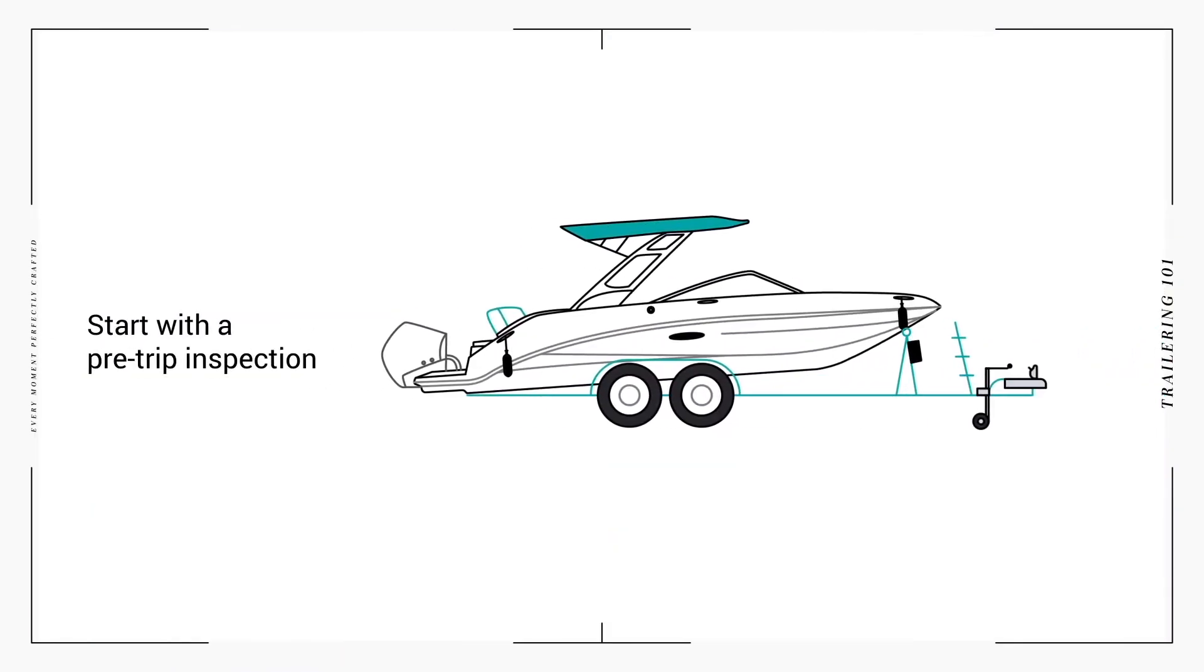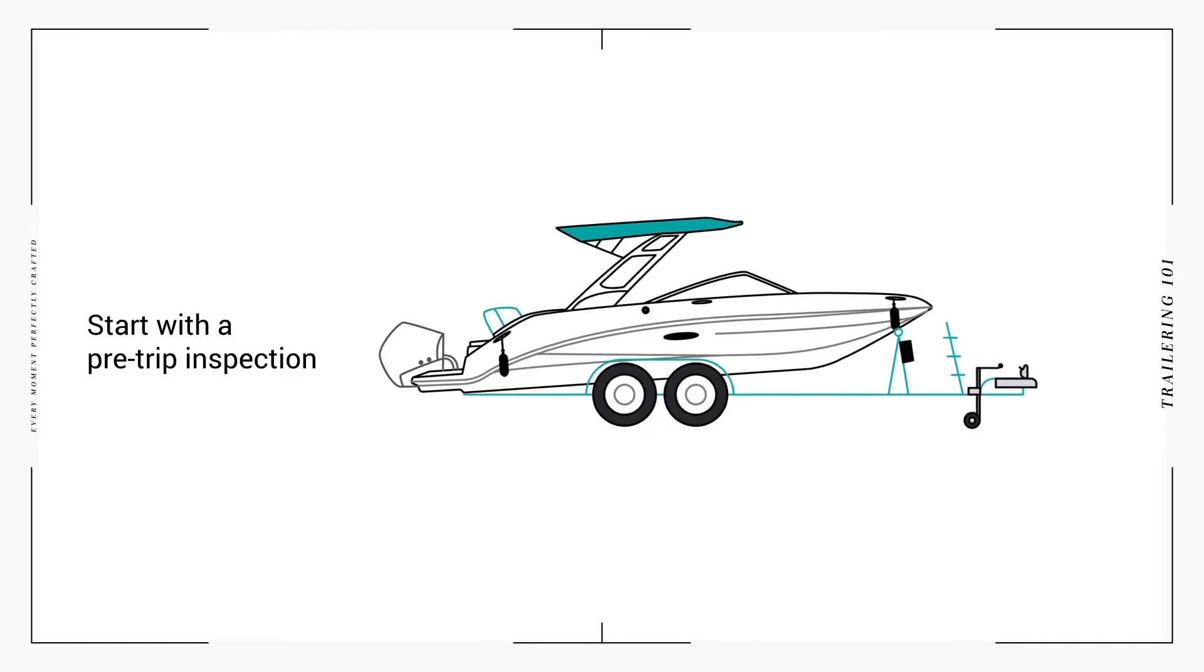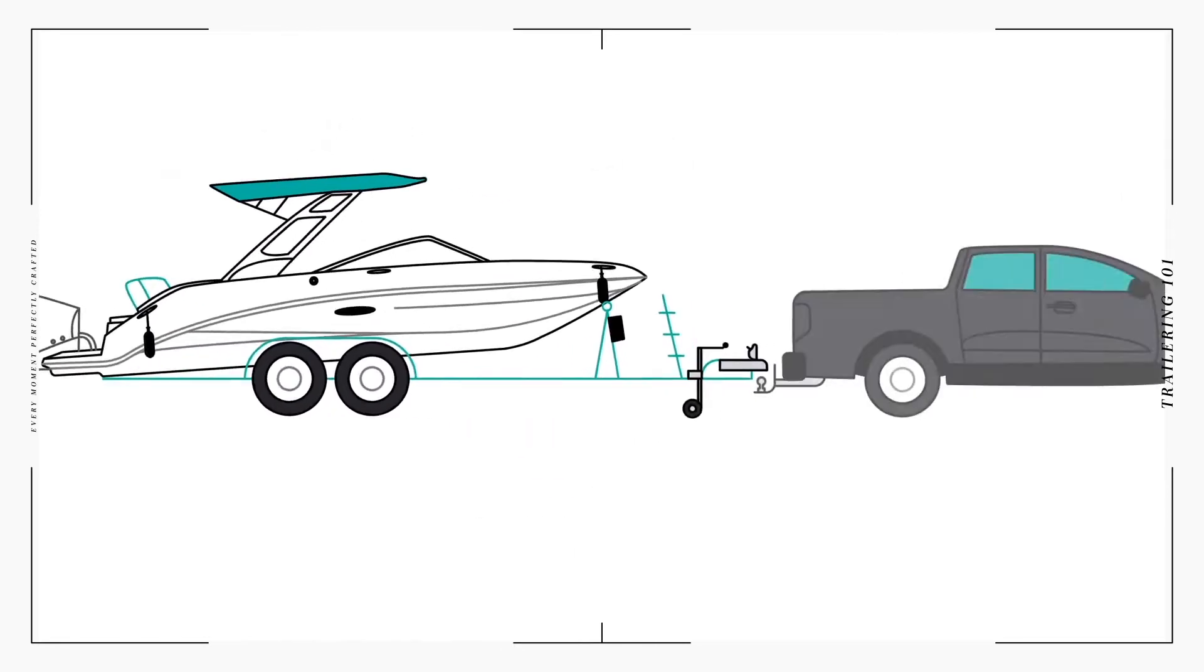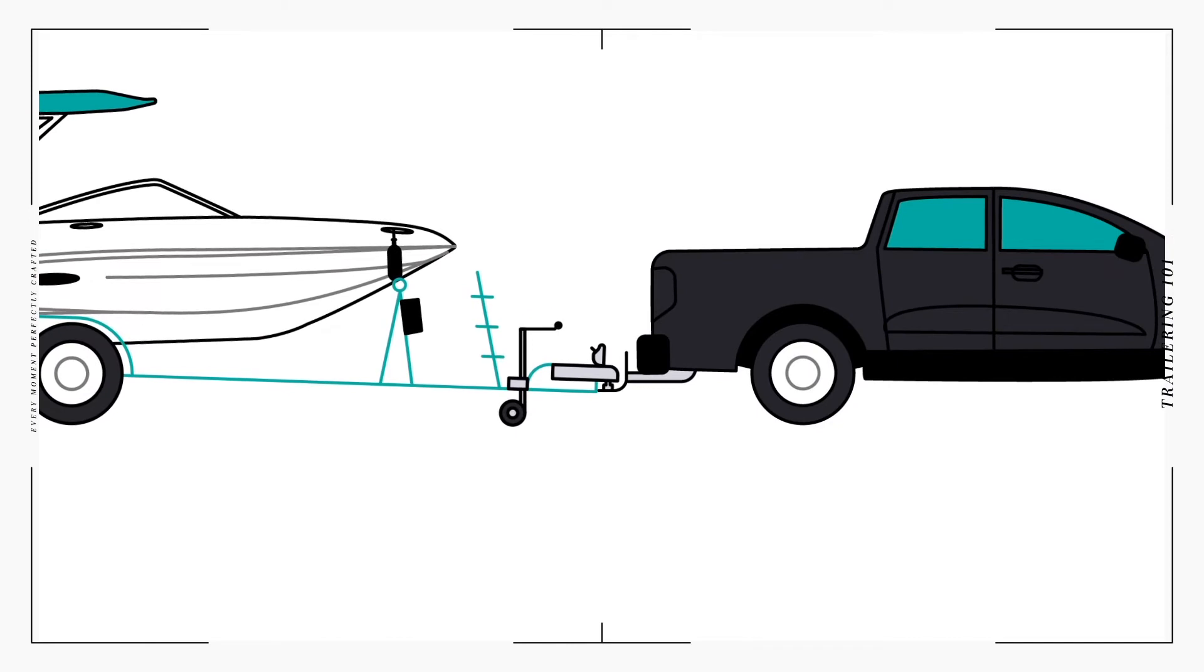Successful trailering begins with a pre-trip inspection. This includes checking tire inflation, ensuring lug nuts are in place, and inspecting springs and beams. From there, drop the trailer hitch onto the ball, close the coupler, and attach the safety pin.